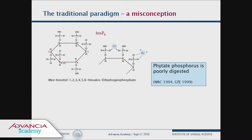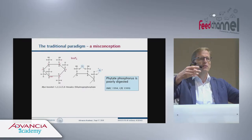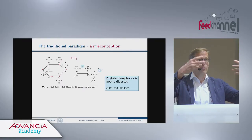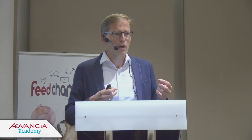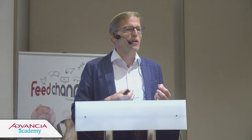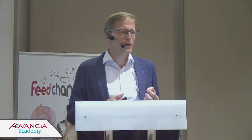At least under certain conditions — imagine for a moment you would be a bird. For hundreds of thousands of years you developed in an evolutionary process, liking to pick seeds with all this phytate, and at the same time needing phosphorus for your growth. Wouldn't it be a good idea to develop mechanisms to get some phosphate out of this phytate, because you don't have access to alternative phosphorus sources?